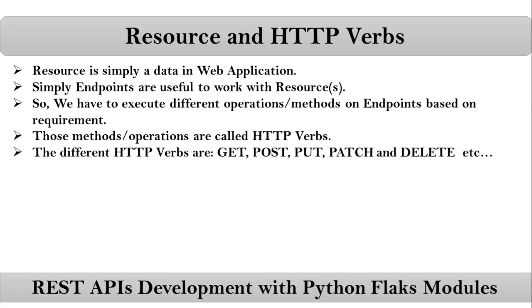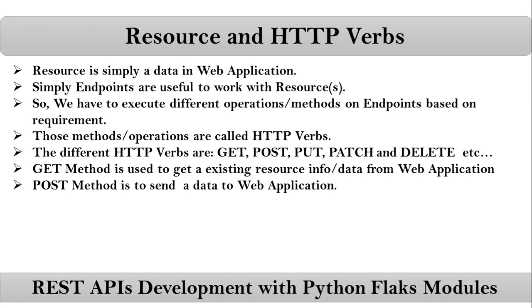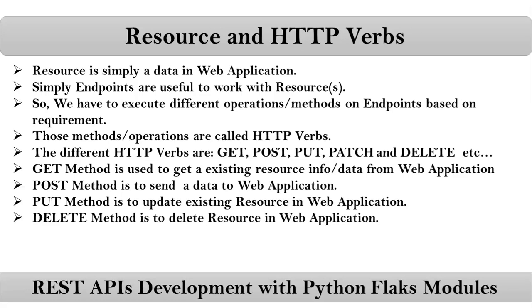There are some HTTP verbs: GET, POST, PUT, PATCH, and DELETE. Each HTTP verb or method has a special meaning. If you want to get existing employee information, execute the GET method on your REST API. To create a new resource, execute POST. To update existing information, execute PUT. To update partially, use PATCH. And to delete, use the DELETE method.